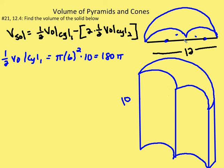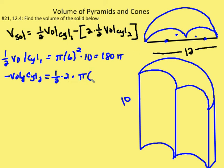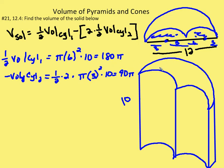Now subtracting the two other half cylinders: two times one-half of cylinder two's volume is effectively just the full volume of cylinder two. The radius of the smaller cylinders is 3, so pi times 3 squared times 10 equals 90 pi. Subtracting 90 pi from 180 pi gives a final answer of 90 pi.